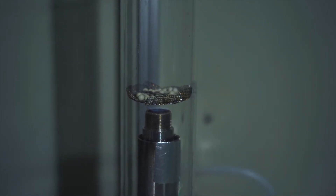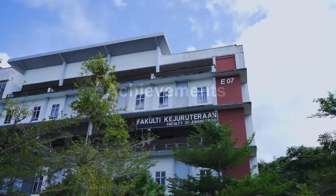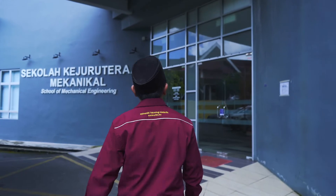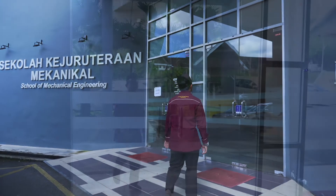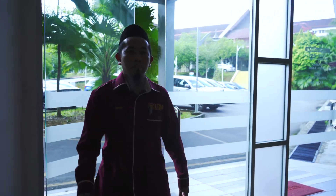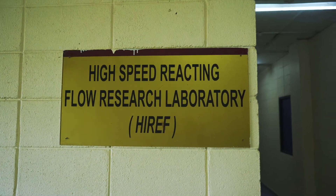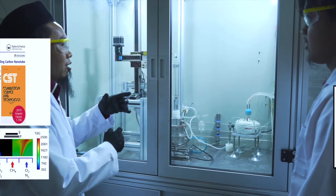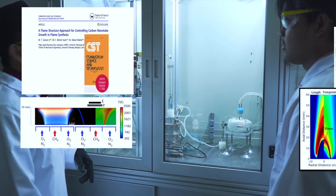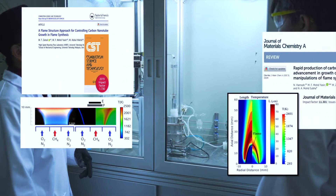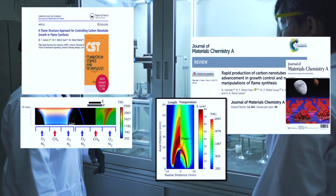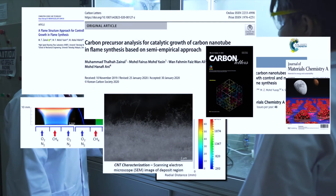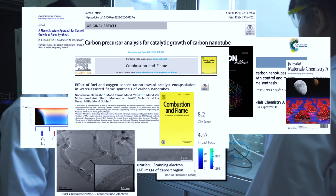Our group is based in the School of Mechanical Engineering, UTM Skudai. The High Speed Reacting Flow Laboratory has been established since 2007, where academicians, graduate students and research assistants work together on various projects. Having expertise in combustion science and modeling, we have managed to understand the synthesis control within the challenging flame environment. The model we developed lets us identify where to grow carbon nanotubes within the flame, and our lab-scale synthesis system can produce dense nanotubes within minutes.